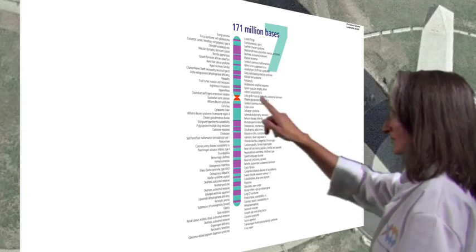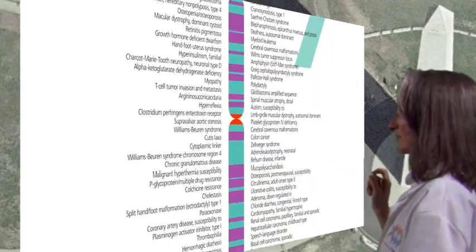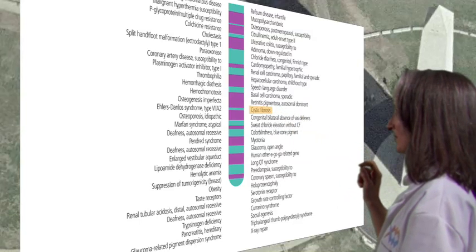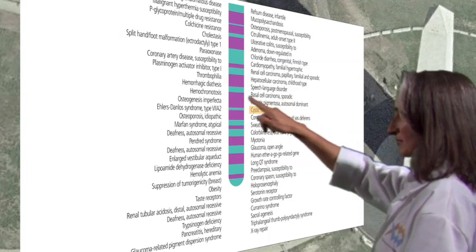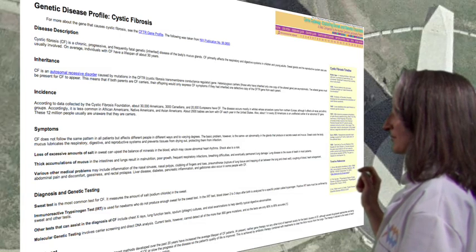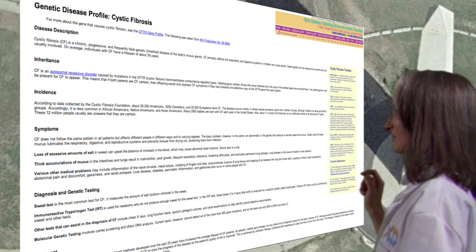Let's enlarge chromosome 7 that we talked about earlier. As you can see, the gene that causes cystic fibrosis is here. On other pages, you can see genetic disease profiles. Here is the cystic fibrosis profile.